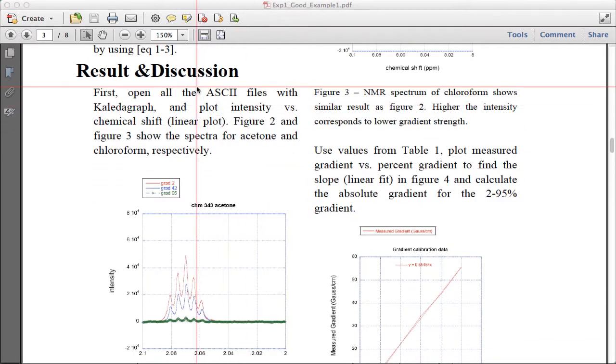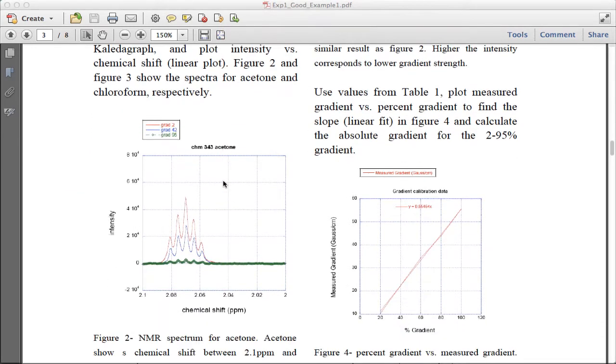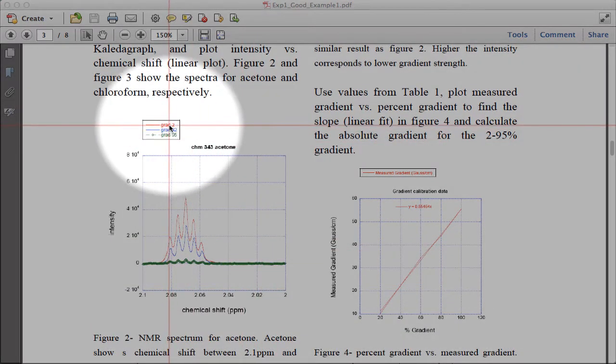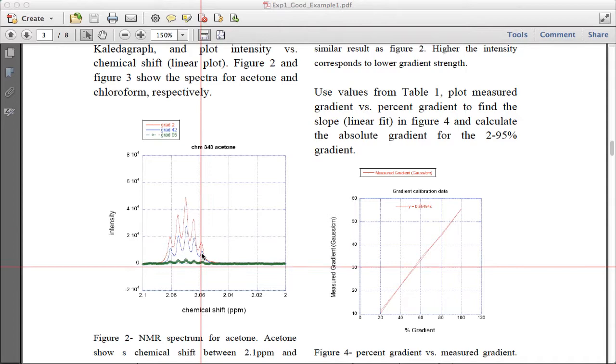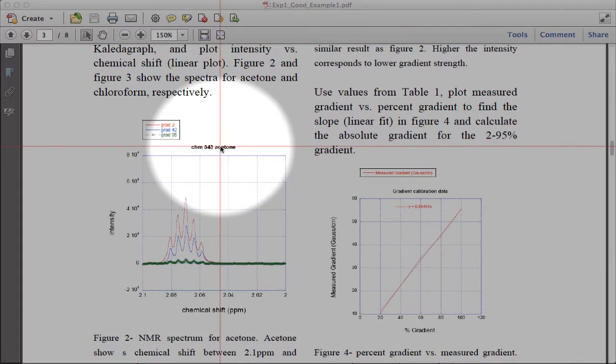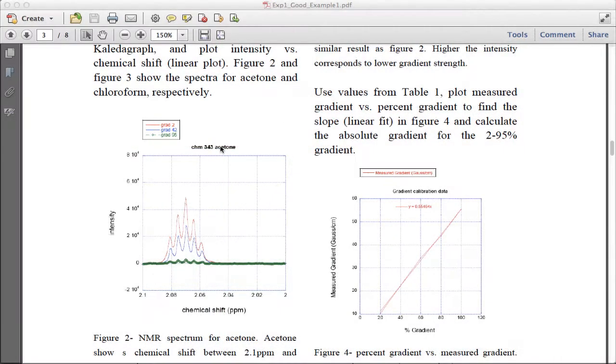And then, we'll start in with the results in the discussion. They show an example of some of the data. They don't show it all. They just show the gradient at 2, 42, and 95. That's fine. It's representative data. There's no reason to clutter up a graph with all the data when you can just show a subset that representatively shows what you want.